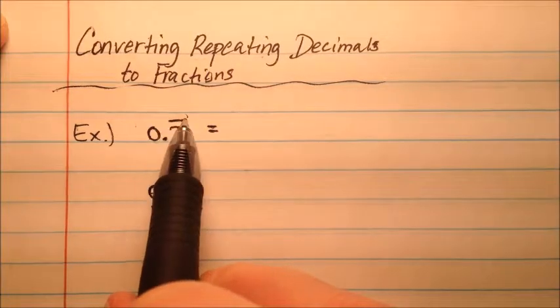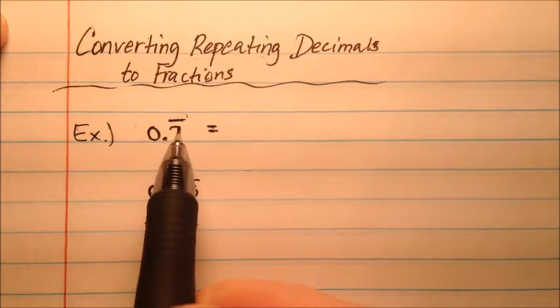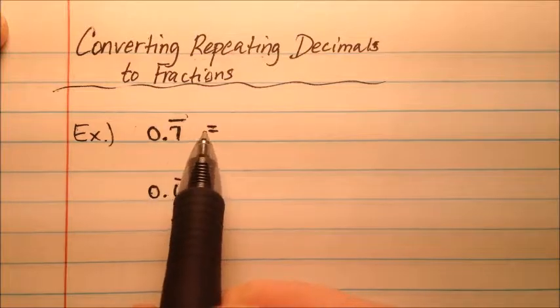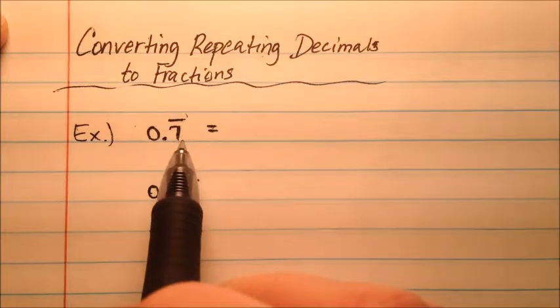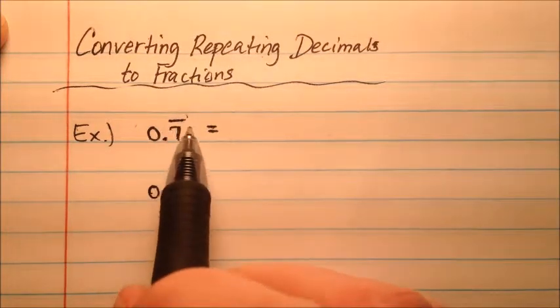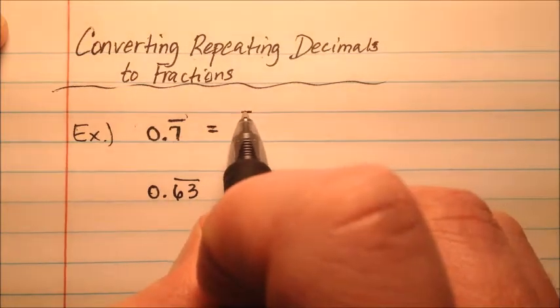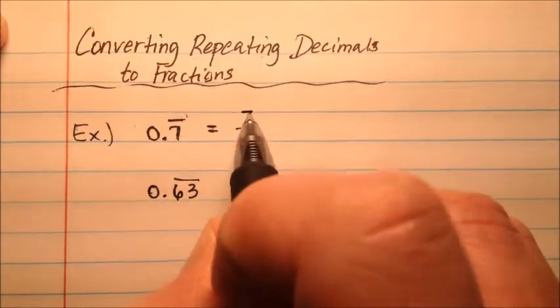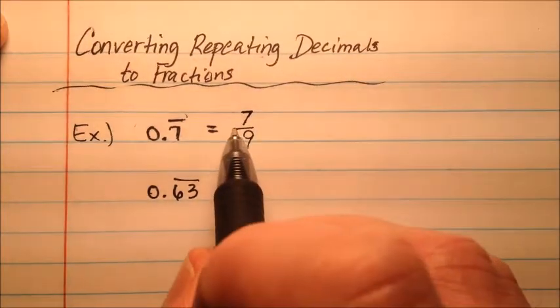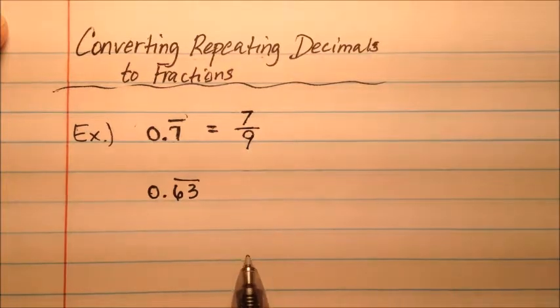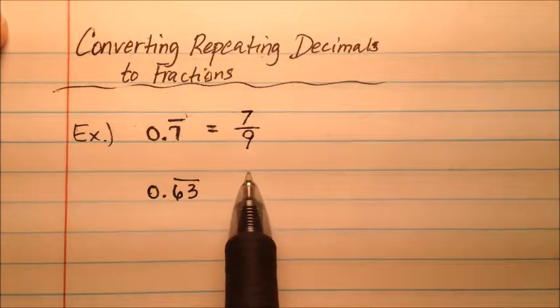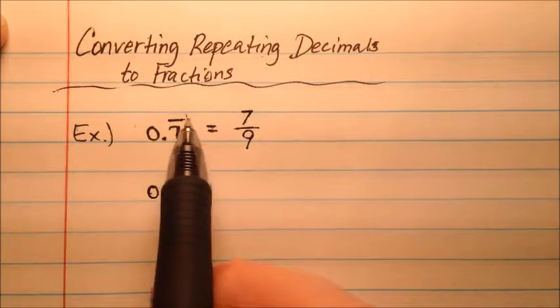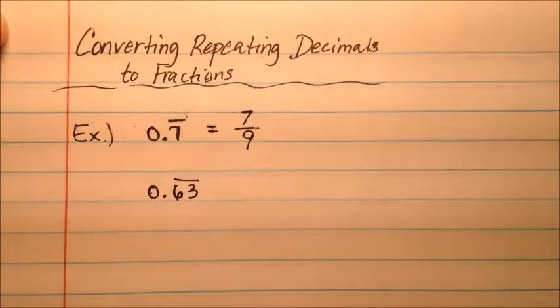So now we have a repeating decimal, which means this is going to be 0.7, and then the 7 goes on forever. Instead of using 10s with repeating decimals, we're going to use 9s. So it's going to be 7 over 9. You can check that by doing long division or using a calculator. Your repeaters are going to go over 9s.